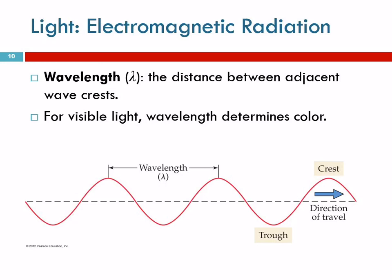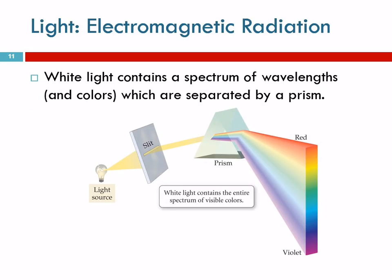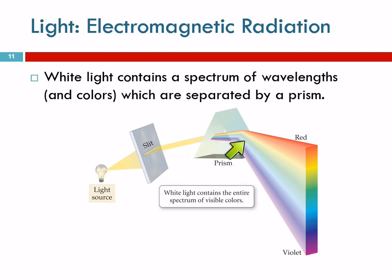Remember, all light travels at the same speed. For visible light — that part of the electromagnetic spectrum that we can see — our eyes perceive different wavelengths as different colors. If we take a light source such as an incandescent light bulb or the light from the sun, pass it through a slit and then through a prism, we can separate it according to its wavelengths, and it will always separate into the same order of colors.